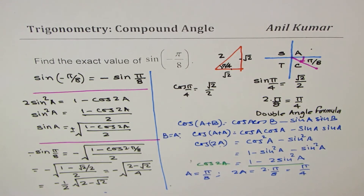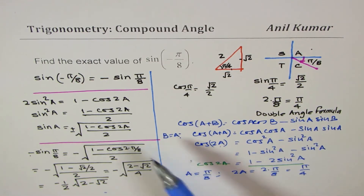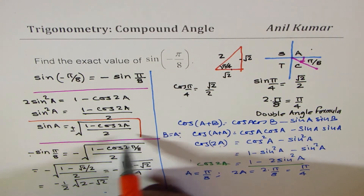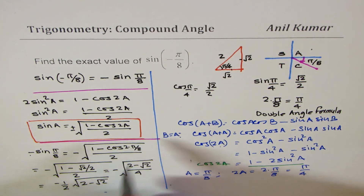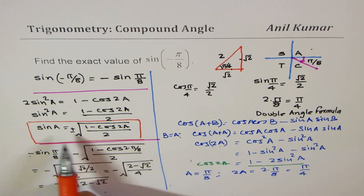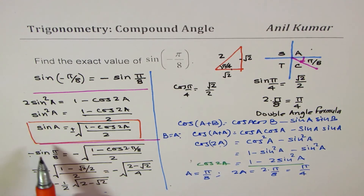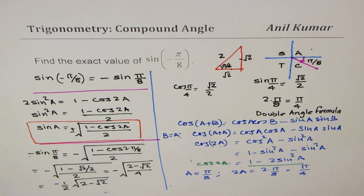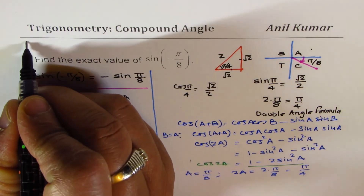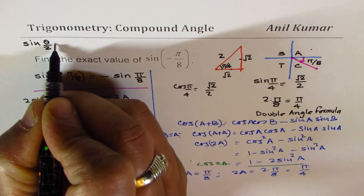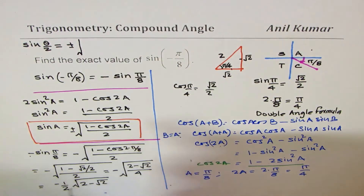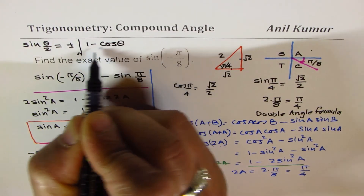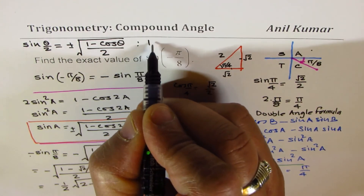For viewers who may not remember how we get this formula, I've derived it all here. But if you know the formula you can start directly. This formula is also sometimes called the half-angle formula, since you could write it as sin(θ/2) = ±√((1 − cosθ)/2). Let me rewrite it as the half-angle formula: sin(θ/2) = ±√((1 − cosθ)/2).